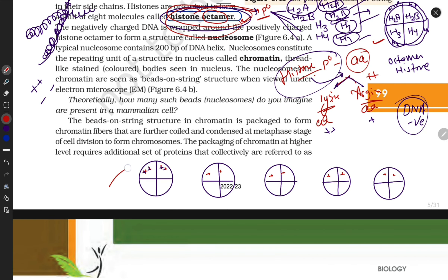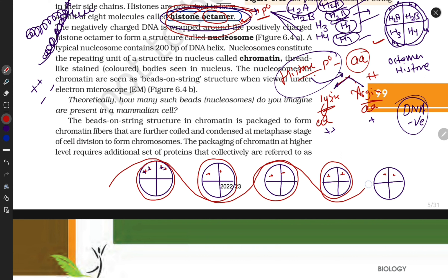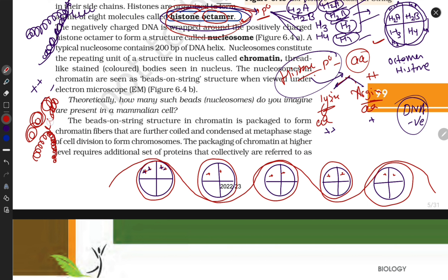DNA coils itself around the histone octamer. It coils and overlaps, hides the histone protein, and after repeated coiling, forms chromosomes.